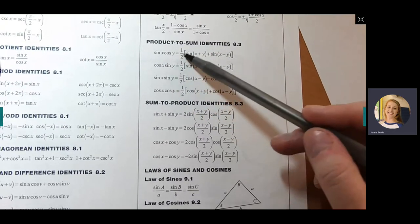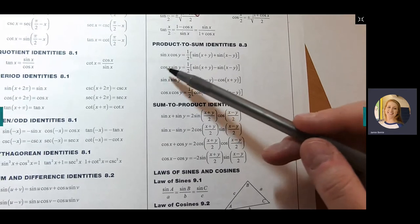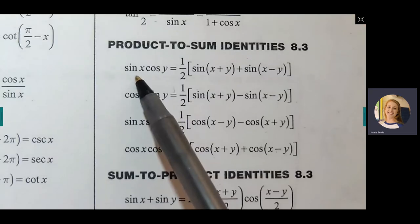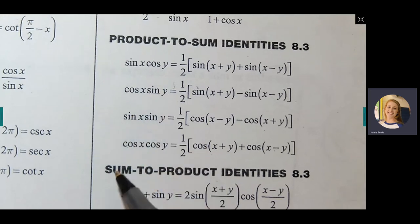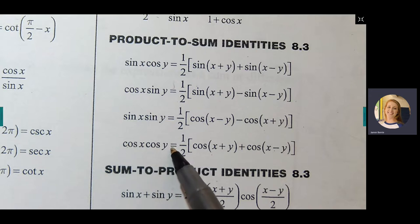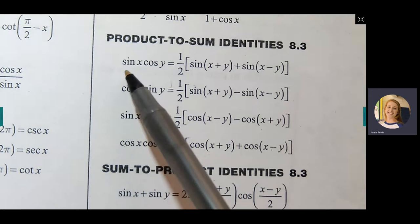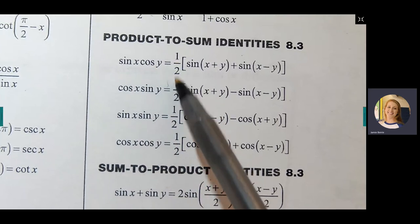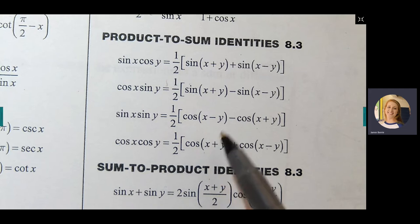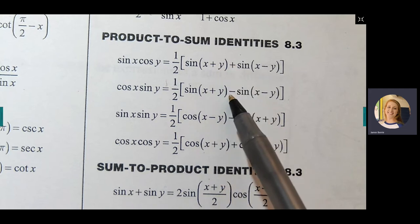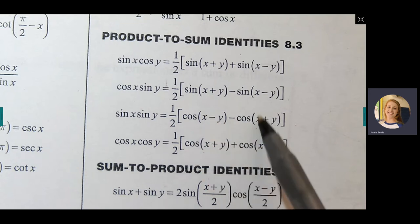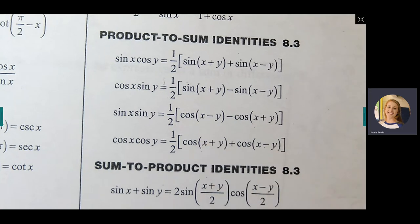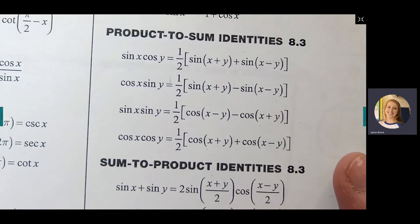The product-to-sum formulas all have one-half out front. The first is for sine times cosine, the second for cosine times sine, then sine times sine, then cosine times cosine. X and Y represent different angles. Be careful with the signs — some have a plus in the middle, some have a minus, and the signs inside the parentheses also vary.